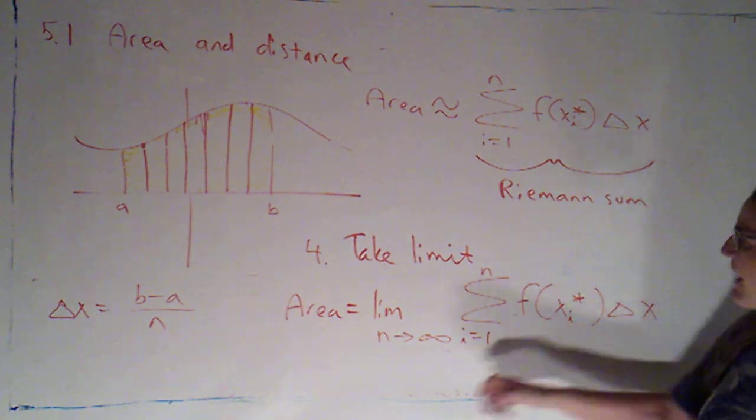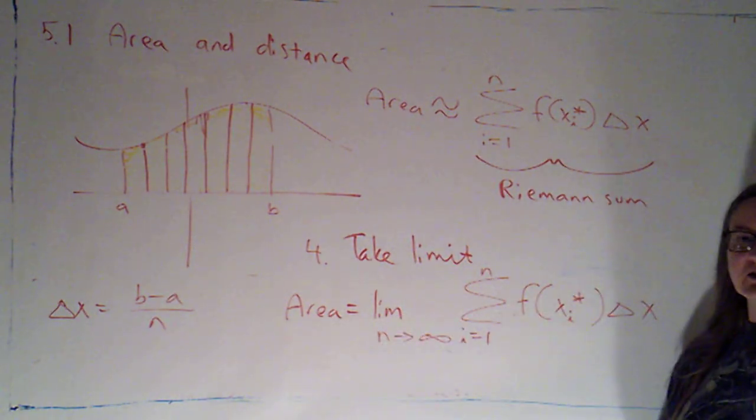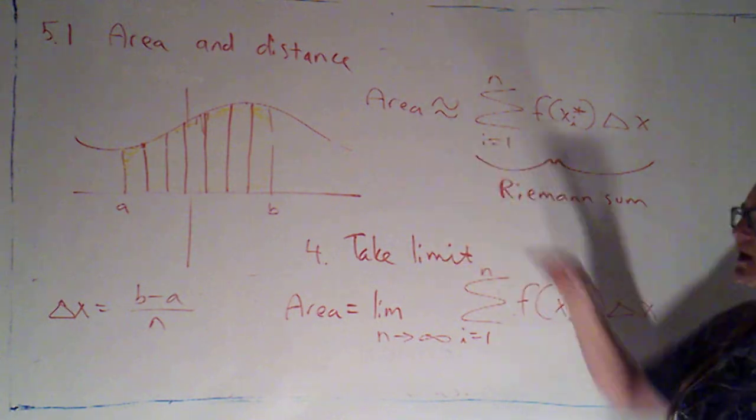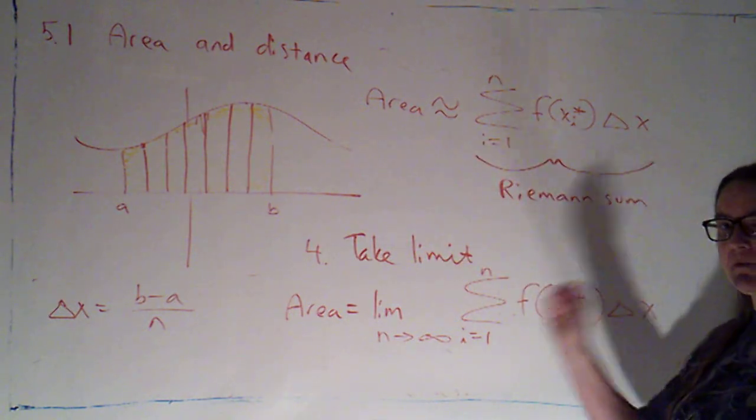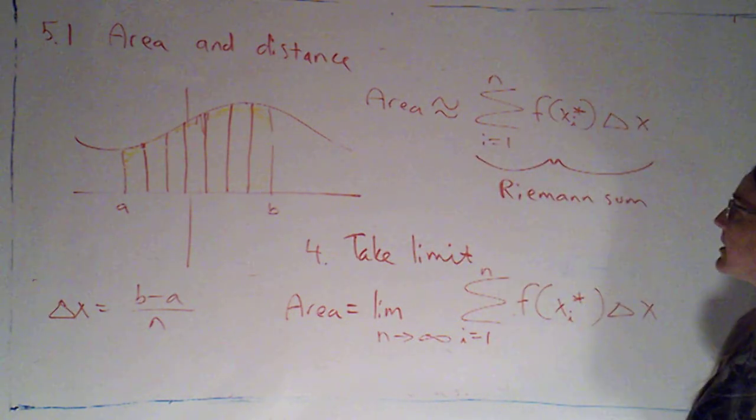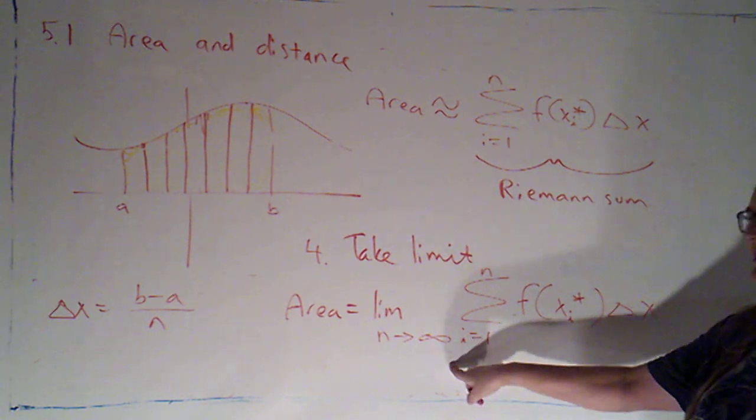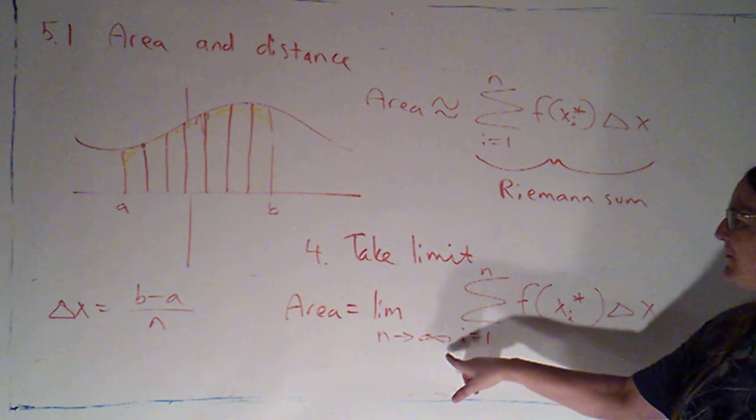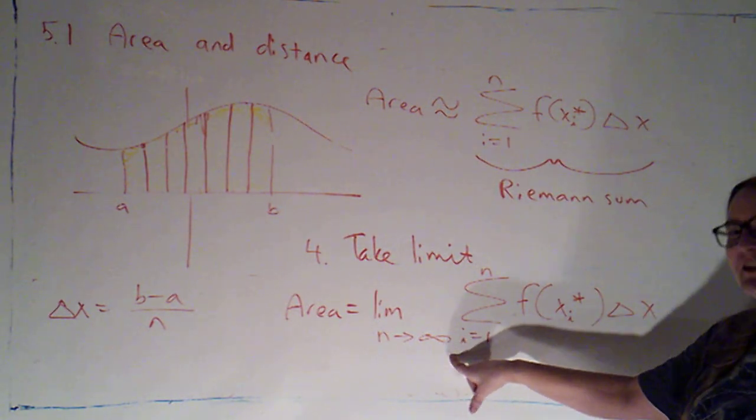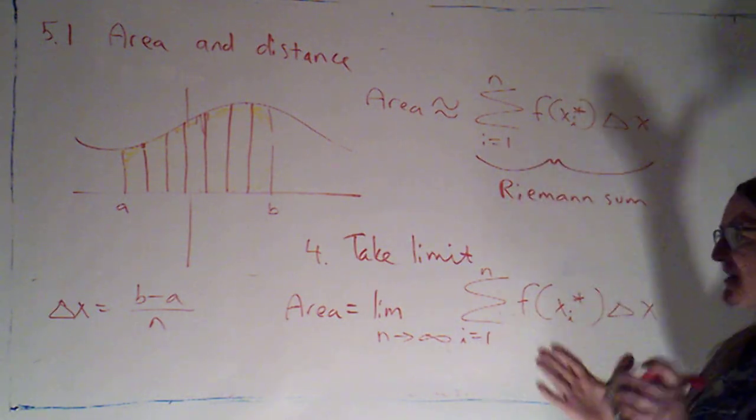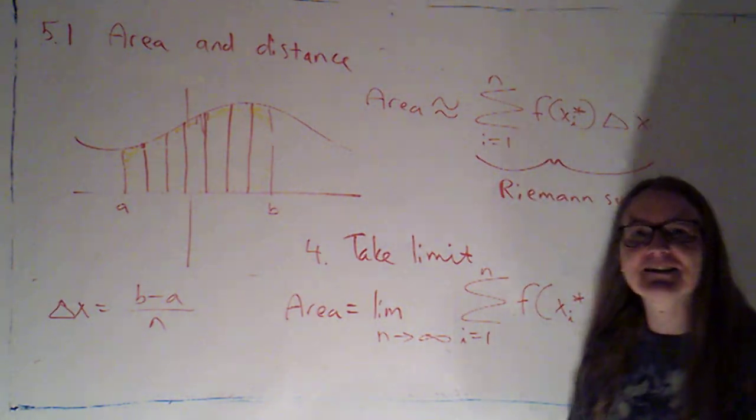Okay. All right. We'll learn how to actually take that limit in the next section. This section, like I said, we're just going to practice those first three steps, chop, approximate, add, to get an approximation. But I wanted you to see where we're going with that. Well, if we take the limit, it does work out that the error we're getting shrinks to zero. And so we do, in fact, get the right answer.